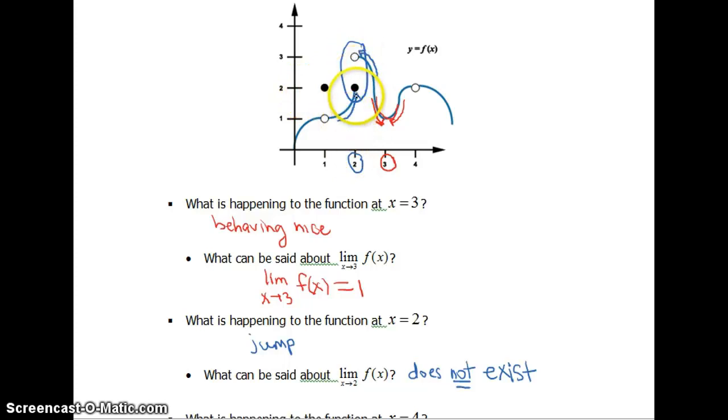Because as you come in from the left and as you come in from the right, it's approaching two different values. And that's not the same thing. All right, the last one I wanna look at here is what's happening to our function at 4.